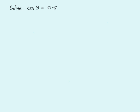We're going to solve a trig equation. In this particular example we're going to solve cosine of an angle theta equals a positive number 0.5, and the method I'm going to use is called the quadrant method.